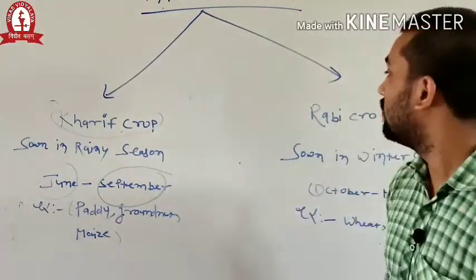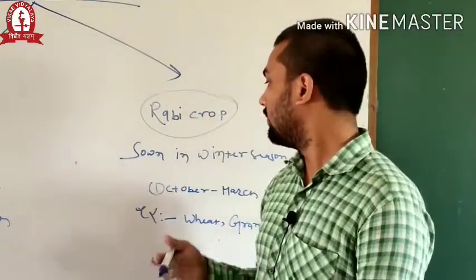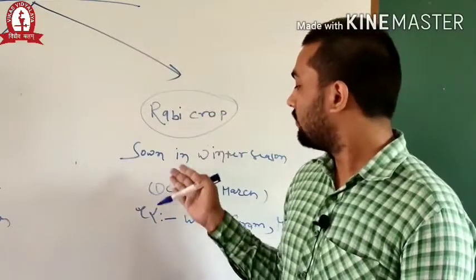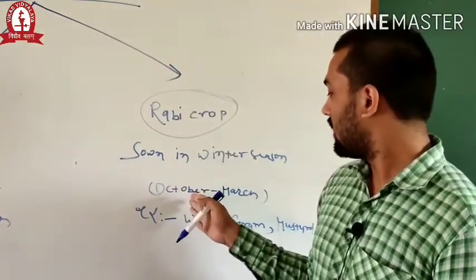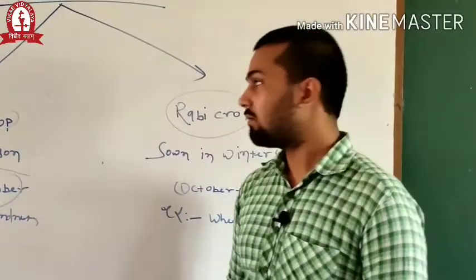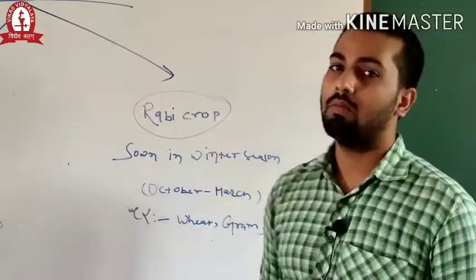Now we will move on to Ravi crop. What is Ravi crop? A type of crop which is sown in winter season. That crop which is sown around October and harvested around March is known as the Ravi crop. Some examples of Ravi crops we have wheat, gram and mustard.